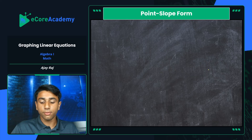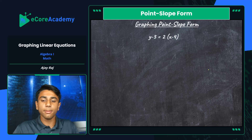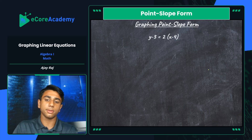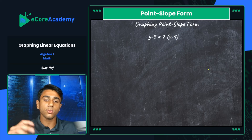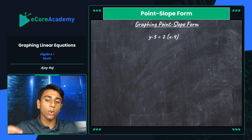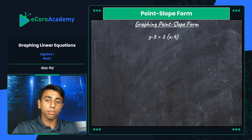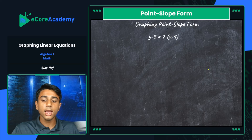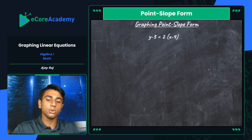Now let's take a look at the point-slope form. We're given the equation y minus three equals two times x minus four. Point-slope form is written as y minus y-one equals m times x minus x-one. The negative three is the y-coordinate of the given point, negative four is the x-coordinate of the point, and two is your slope. This form is literally derived off of a single coordinate pair.